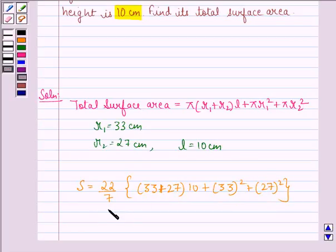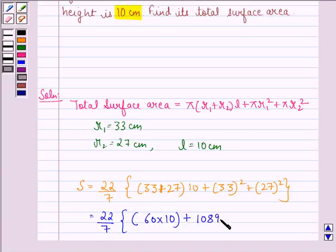This is equal to 22/7 into, now 33 plus 27 is 60, this is 10 plus square of 33 is 1089 plus square of 27 is 729.